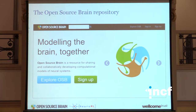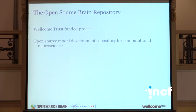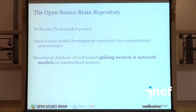So the Open Source Brain Repository is online at opensourcebrain.org. It's been around for just over five years, funded generously by the Wellcome Trust. The key aim is to have an open source model development repository specifically for computational neuroscience — a database of well-tested spiking neuron and network models in standardised formats. We're concentrating on spiking neuron models, but a lot of the processes and tools we use are applicable to other types of neuronal modelling, like neural mass models.